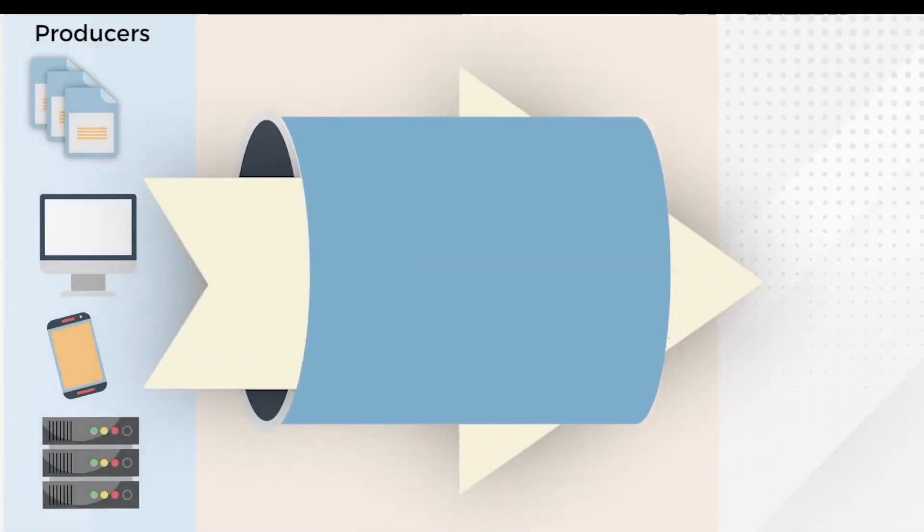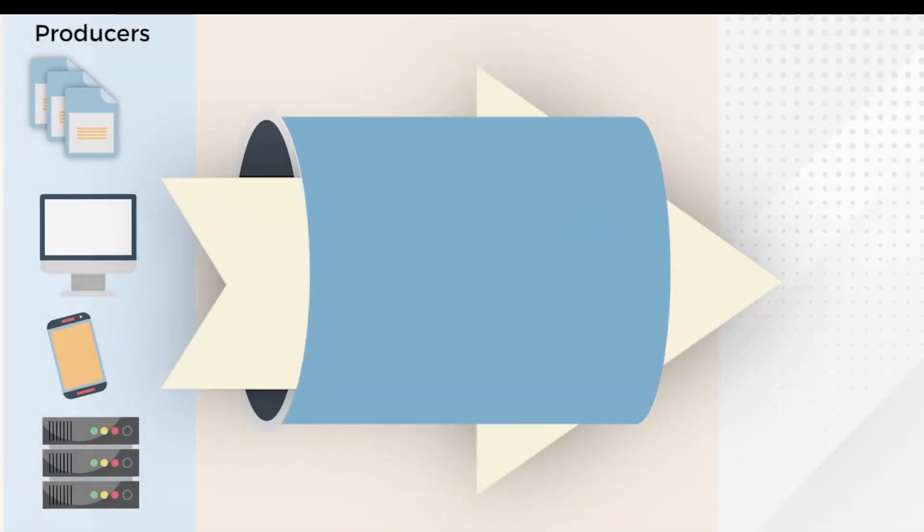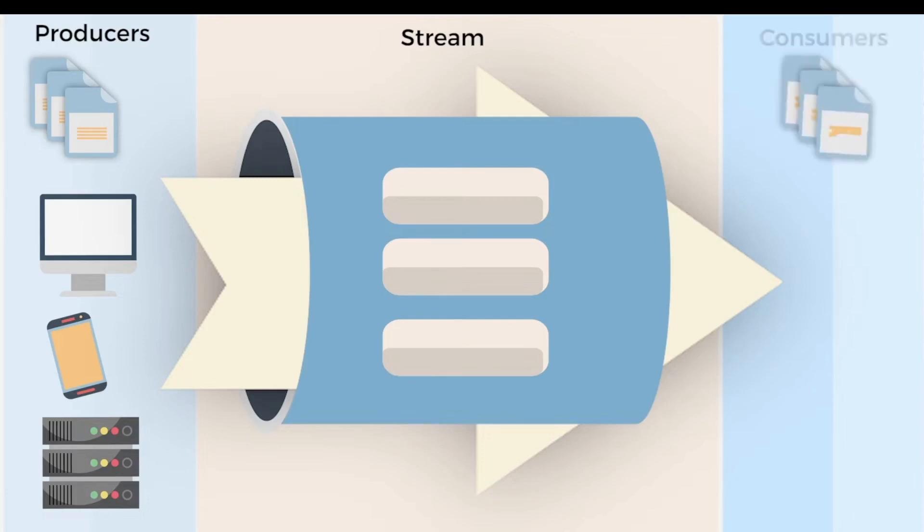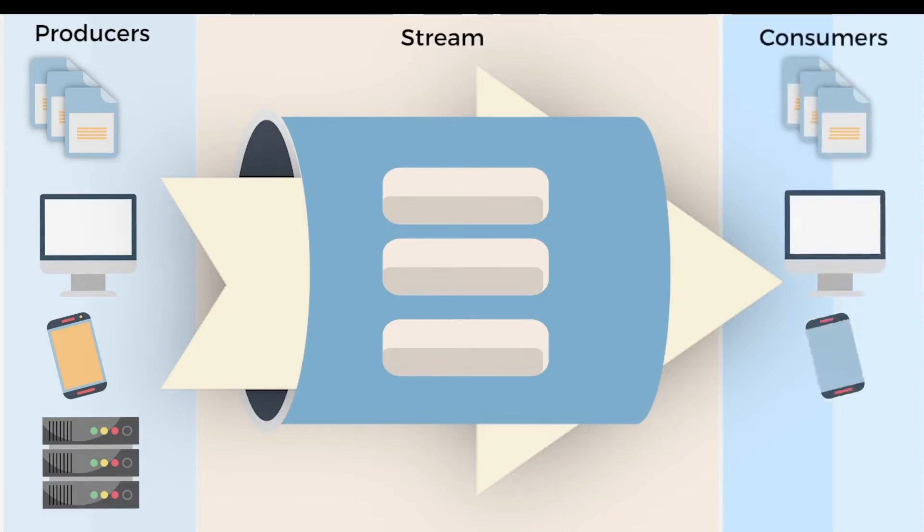The other option is streaming, which is going to be a little bit more real time. As an event happens — let's say somebody clicks on something — that record is going to be captured and moved along into a database or perhaps directly into your reporting tool. You can add transformation in between with different tools, but in that scenario it's happening in real time as opposed to waiting for the next batch run. Typically you'll actually see a combination of the two — some data on a batch schedule, others in real time streaming.